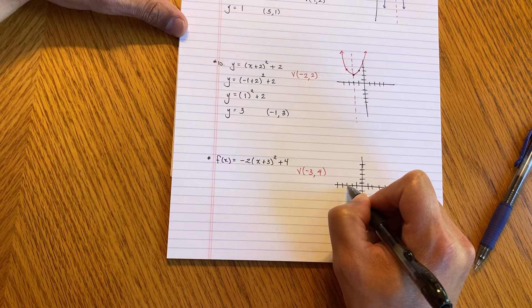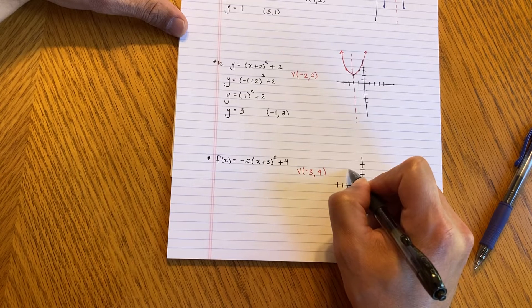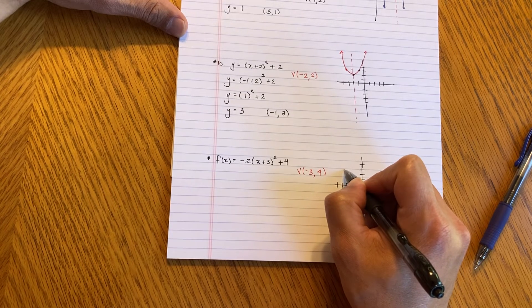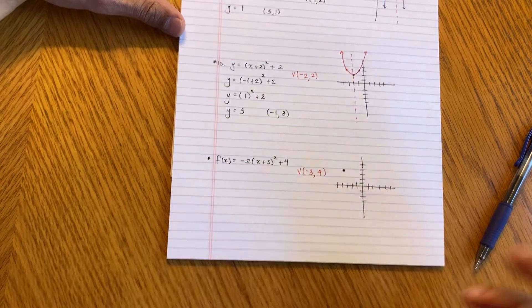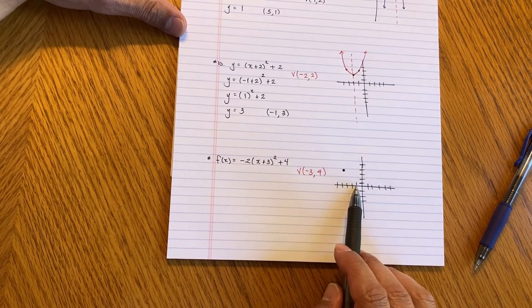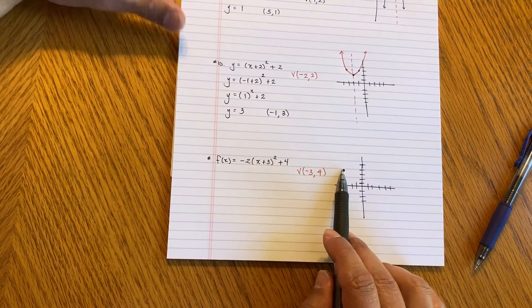Negative 3. 1, 2, 3, positive 4, and then it's going to be somewhere right here. So that's my vertex. So negative 3 to the left. 1, 2, 3, and then up 4.